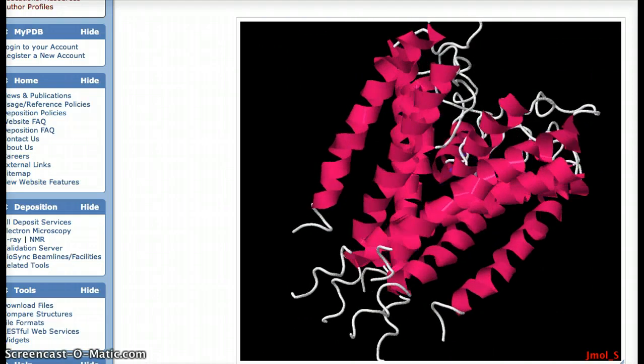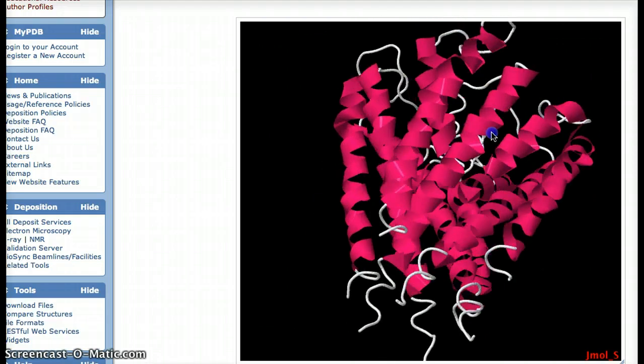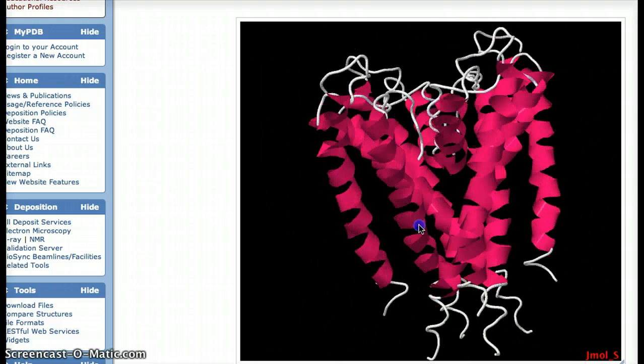As you can see, it has some alpha helices, no beta sheets.